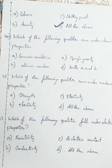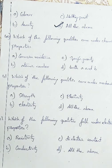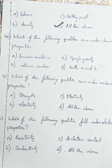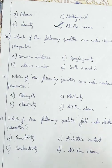Question number 40: which of the following quantities comes under chemical properties? Option A: corrosion resistance, Option B: atomic number, Option C: specific gravity, Option D: both A and B. Corrosion resistance and atomic number are chemical properties, but specific gravity is not. So we will be going with Option D, both A and B.